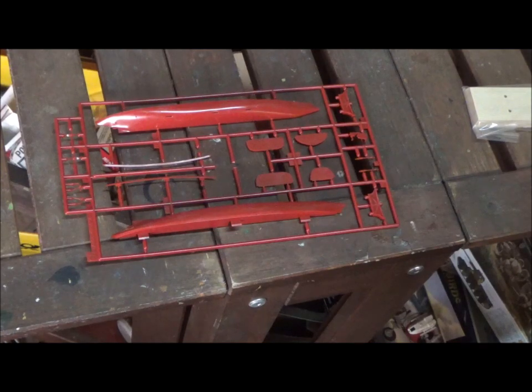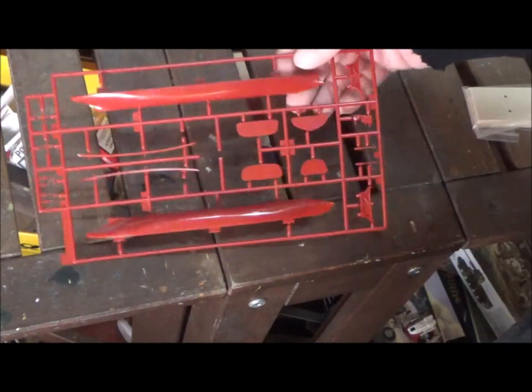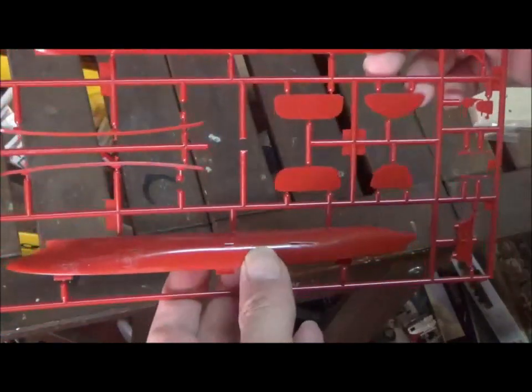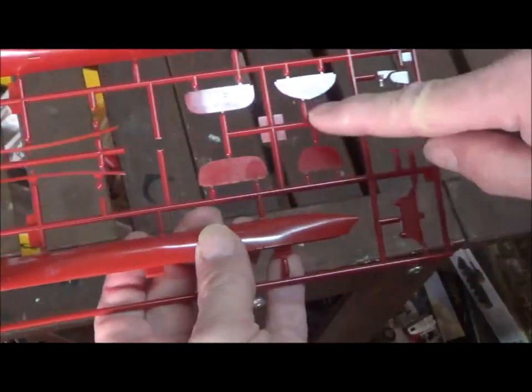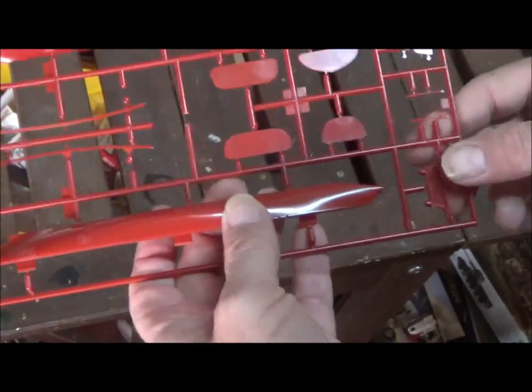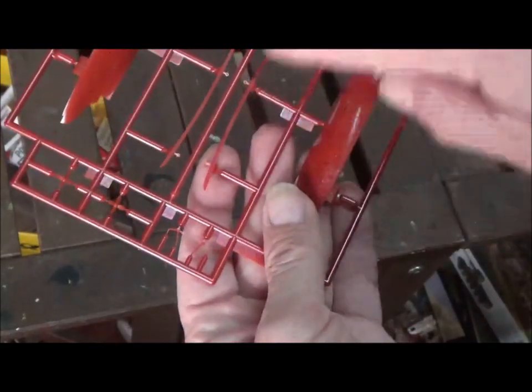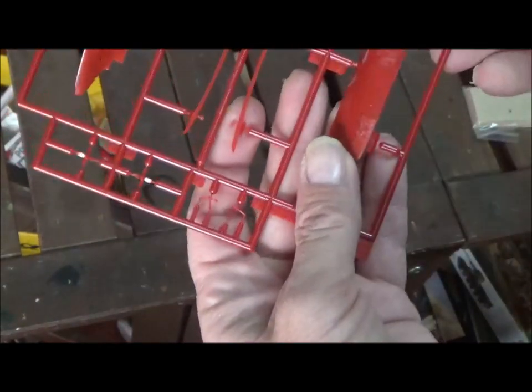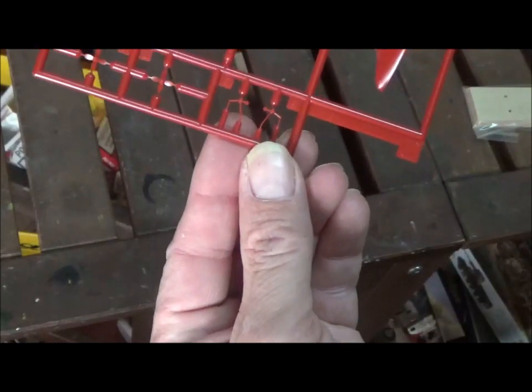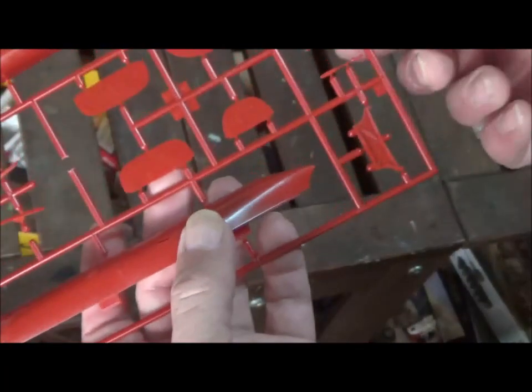So here's tree J. This is the last sprue. Here we have our hull halves. Here's the pieces that go inside the hull. This is for the base and these parts that go underneath on the sides and propellers. These are propeller shafts and rudder.